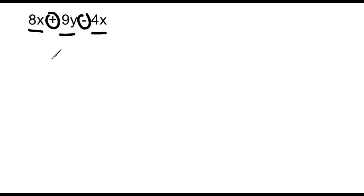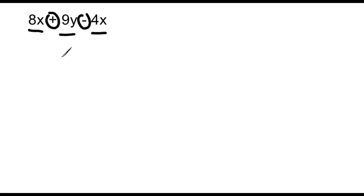Now what we can do is shorten up this algebraic expression. We cannot solve it because we don't know the values of x or y, and this expression is not set equal to anything. So all we can hope to do is shorten it up by combining like terms. We have three terms here, and two of those three terms are like terms — specifically, 8x and 4x are like terms.